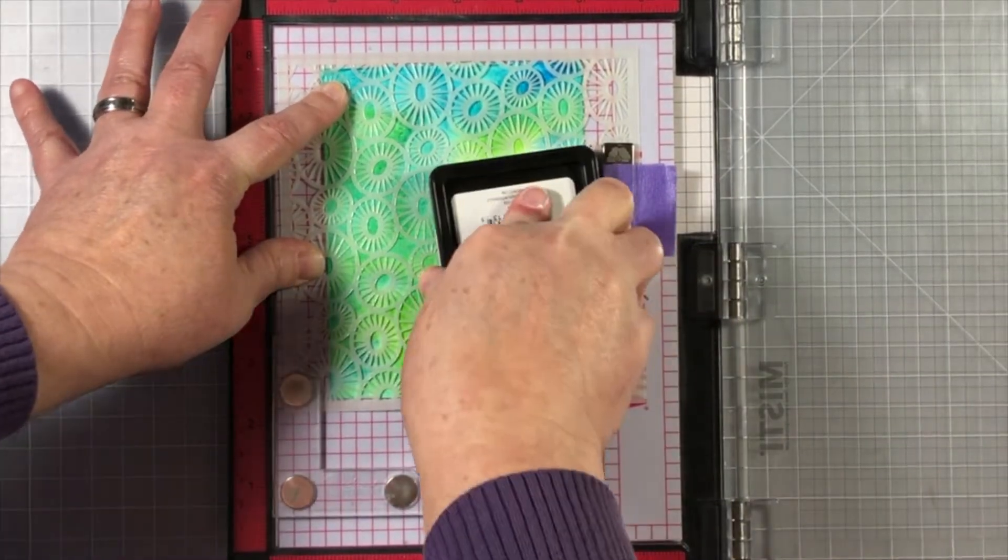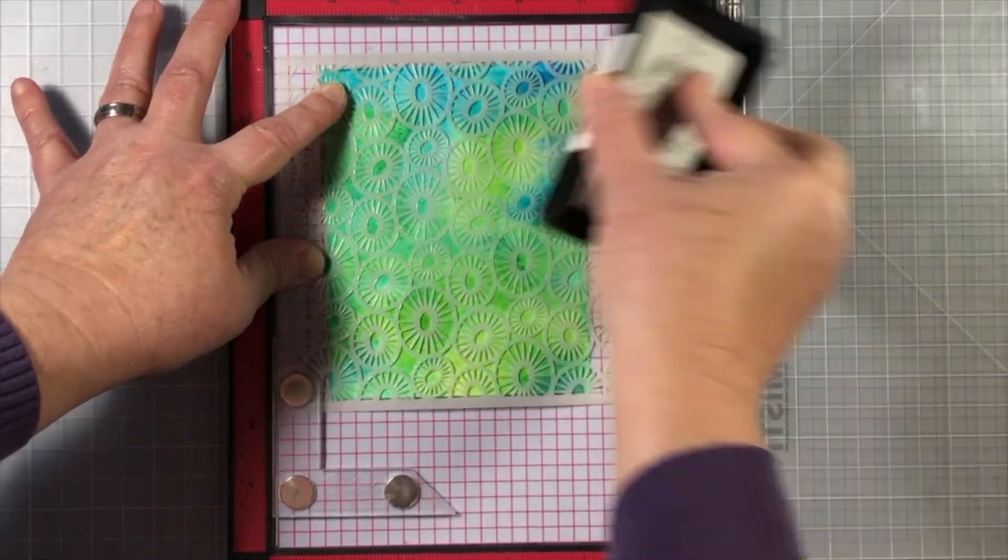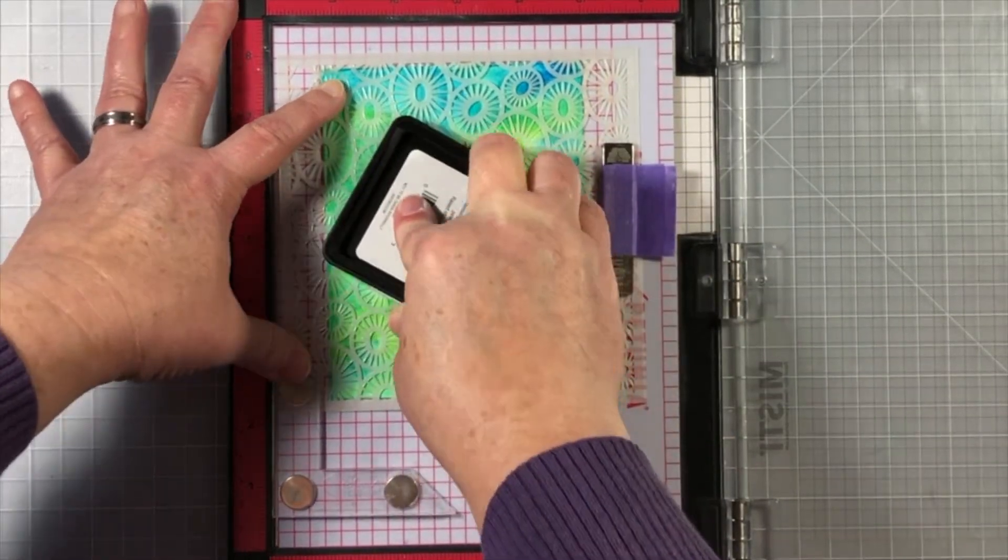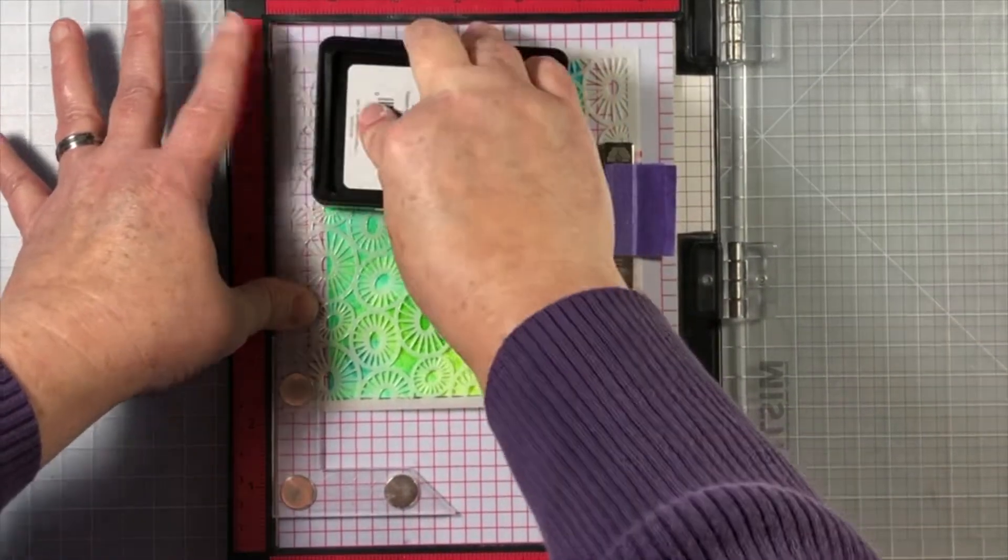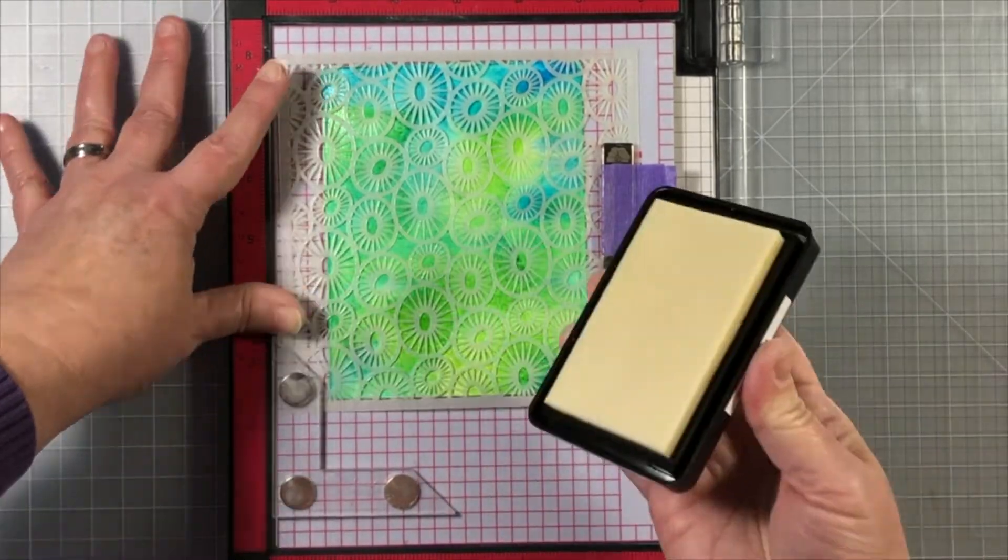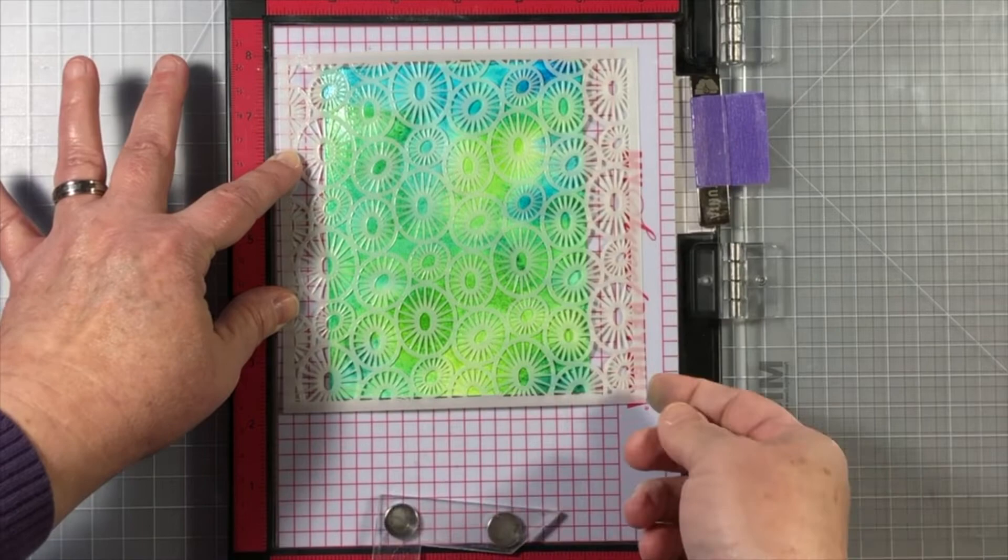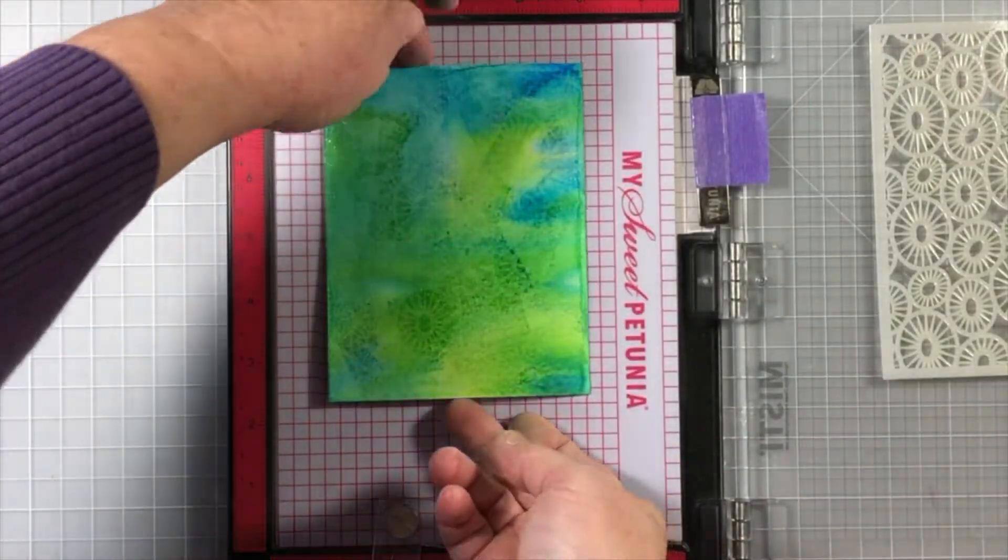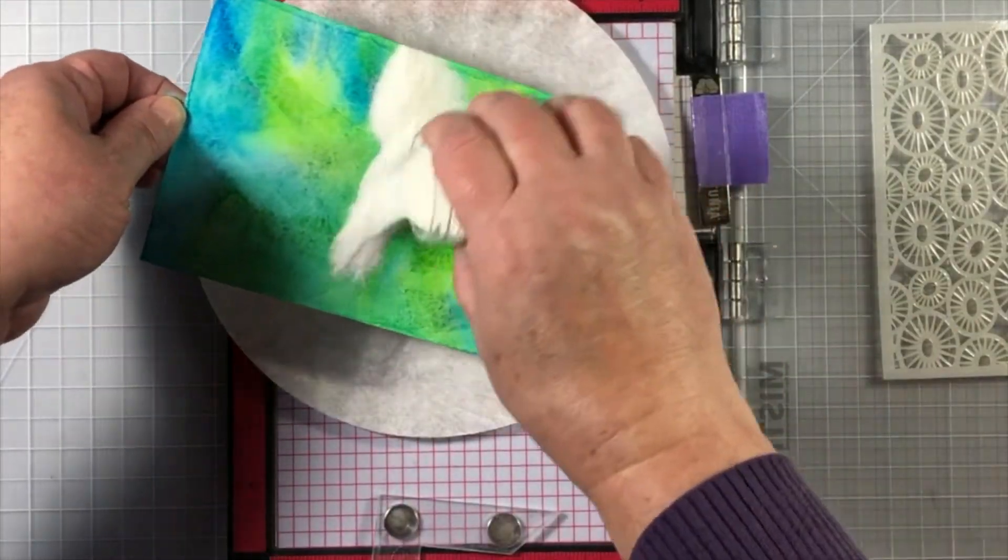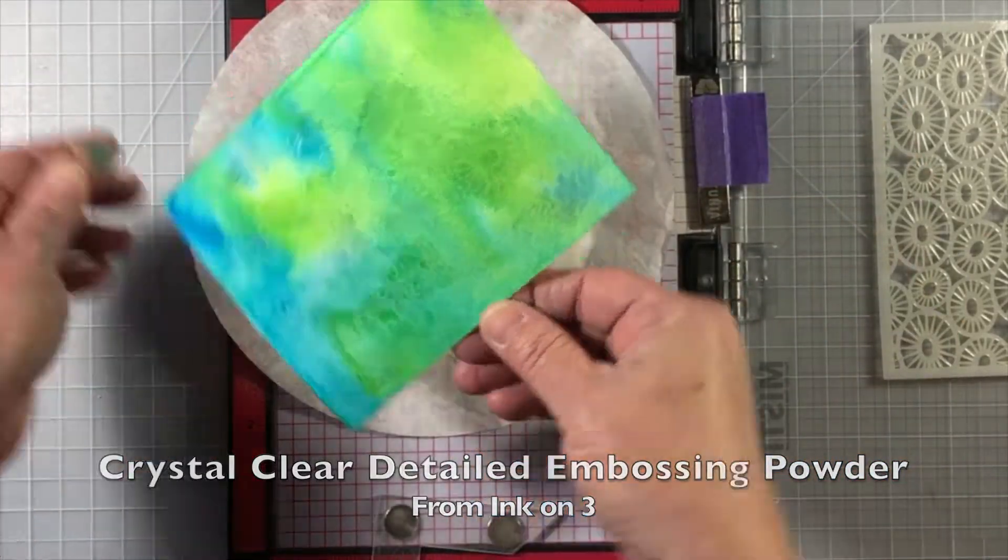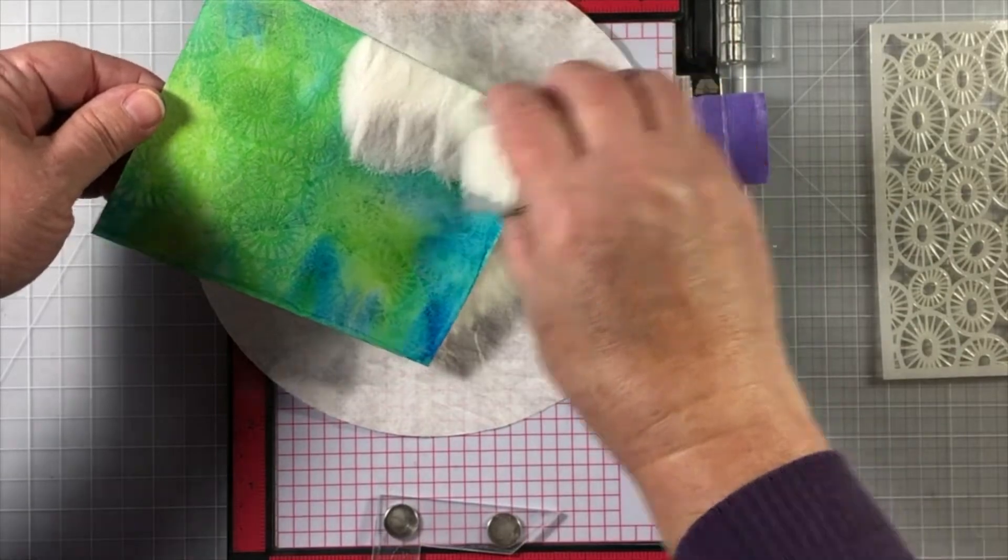I'm using some juicy embossing ink from Ink on 3 and I'm going right through that stencil. What I'm doing is applying the ink directly down to the watercolor paper through the stencil, and then we're going to add some clear embossing powder from Ink on 3 on top of that juicy embossing ink.